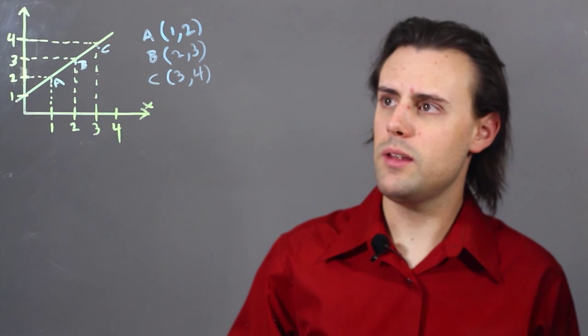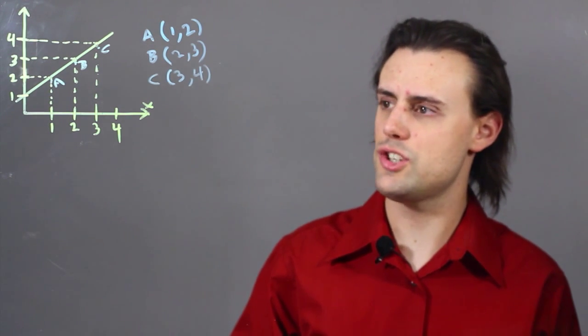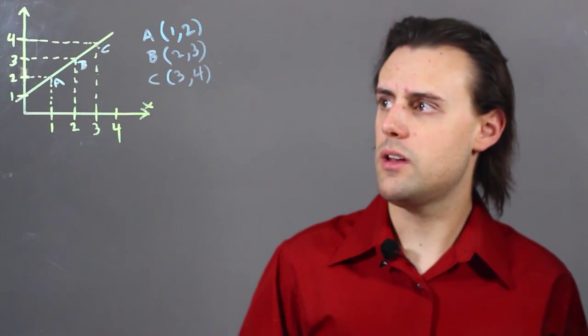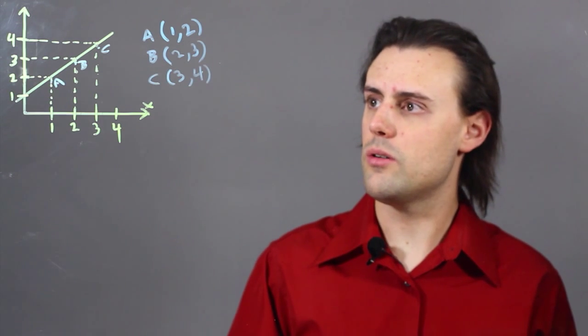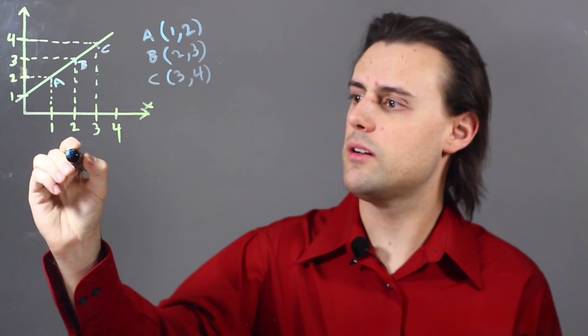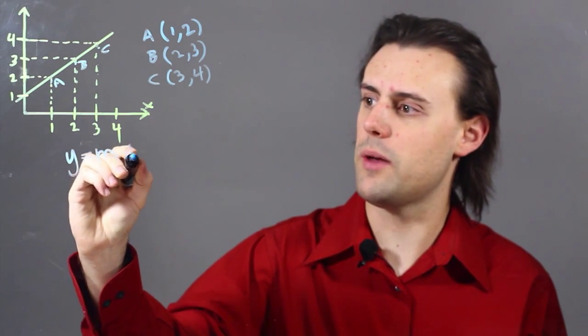And what we really mean by proportional is that the relationship between the x values and the y values are linear. So if the relationship is linear, then we can write down the slope-intercept equation, y equals mx plus b.